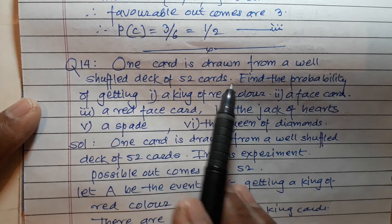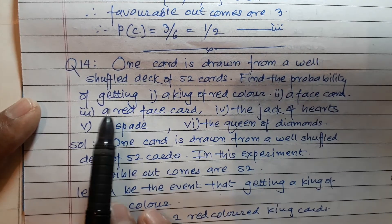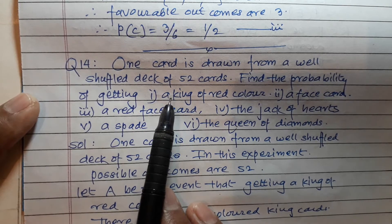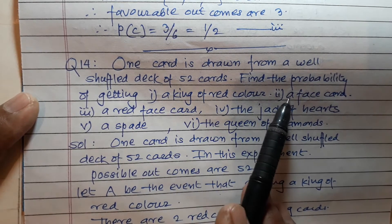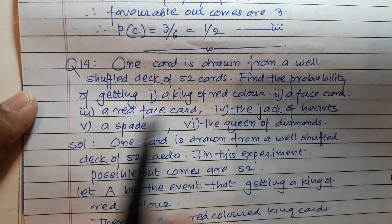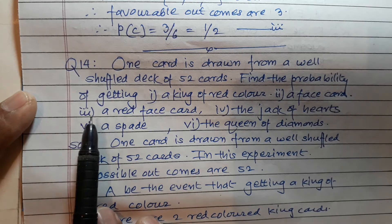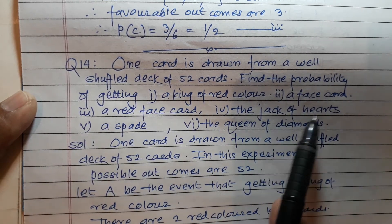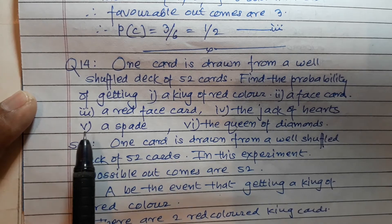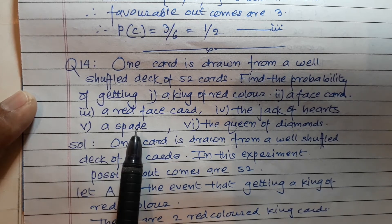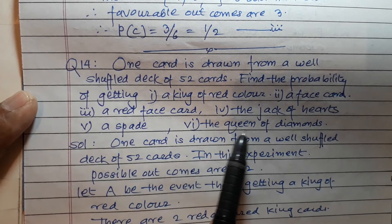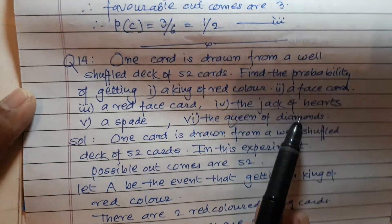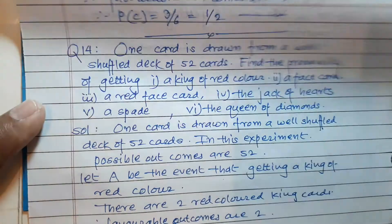Find the probability of getting: one, a king of red color; two, a face card; three, a red face card; four, the jack of hearts; five, a spade; six, the queen of diamond.